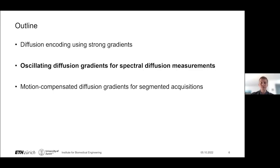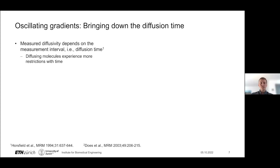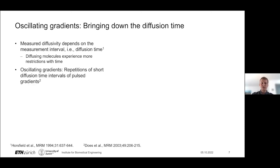Given this brief introduction, I'll now move on to the first project: our use of oscillating diffusion gradients and spectral diffusion measurements. To first motivate why we would like to use oscillating gradients, it's important to consider that the diffusivity measured in a diffusion experiment depends on the diffusion time — the time over which we probe diffusion. As more time passes, diffusing molecules experience more restrictions, thereby having their motion limited. We would like to understand this relationship between diffusivity and diffusion time, as it may reveal insight into characteristic microstructural length scales. Achieving short diffusion times is rather hard with pulse gradients, and this is where oscillating gradients come in: they are essentially repetitions of short diffusion time intervals of pulse gradients.